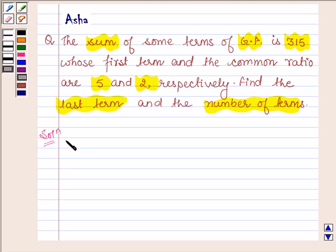Let's now begin with a solution. Let the number of terms of GP equal n. So we are given that sum of n terms is equal to 315.